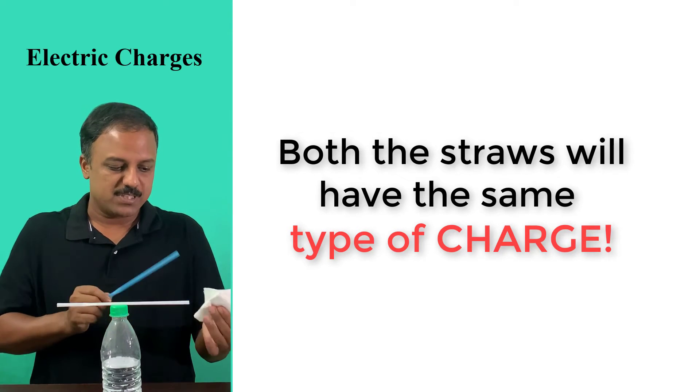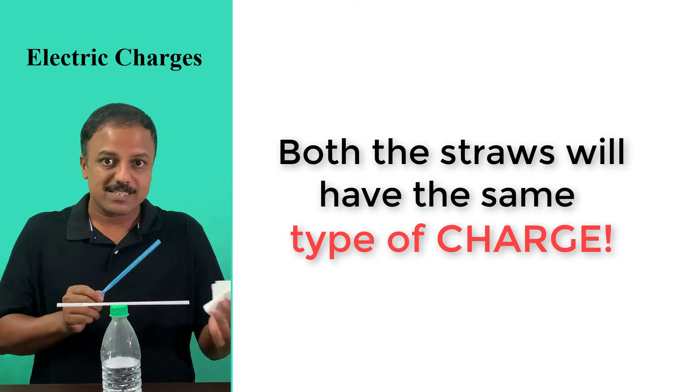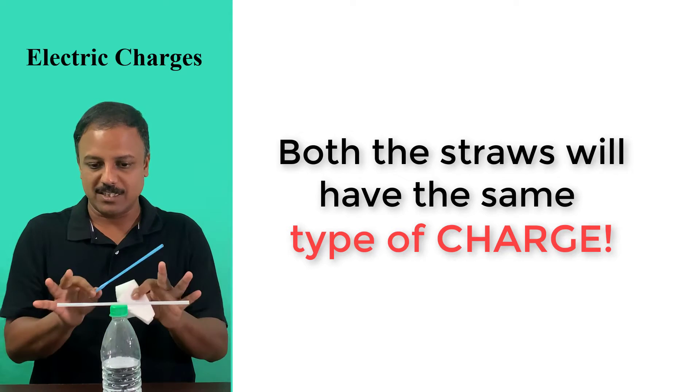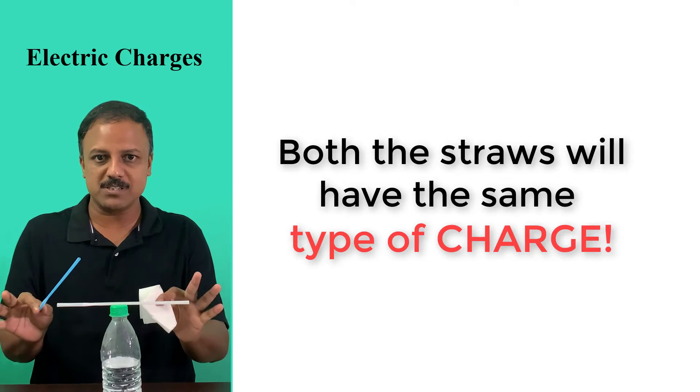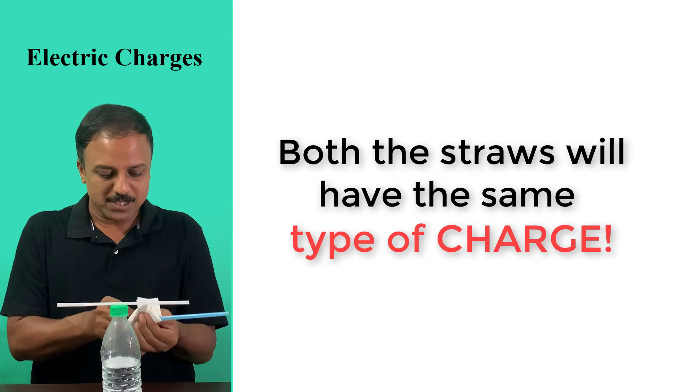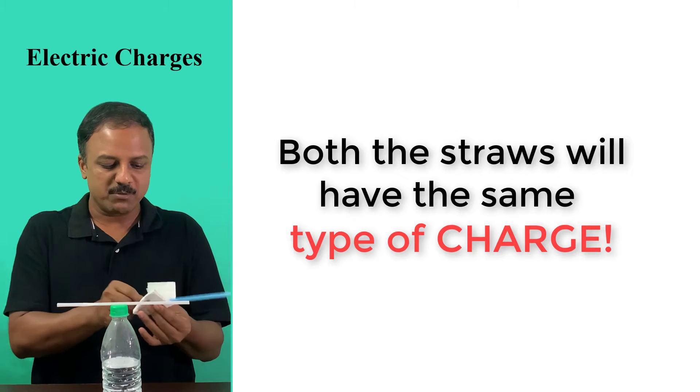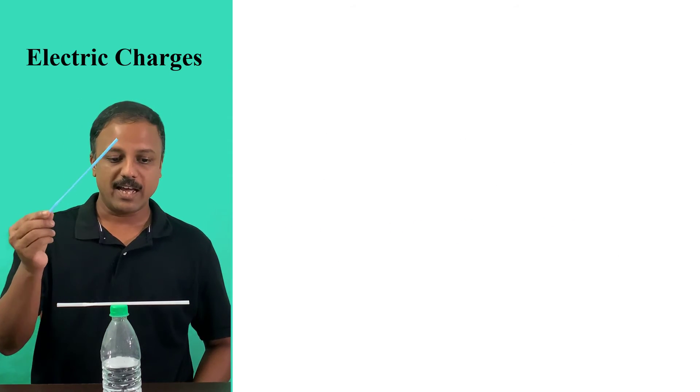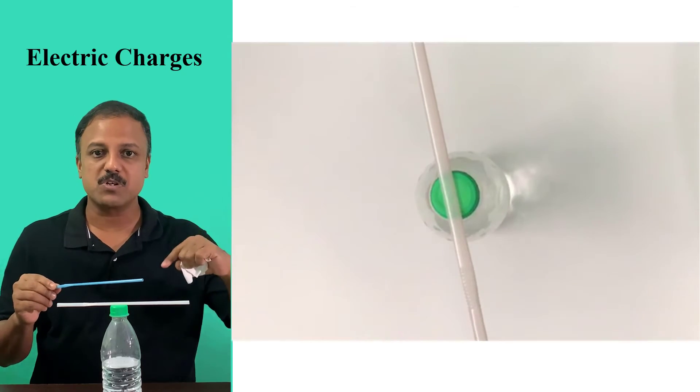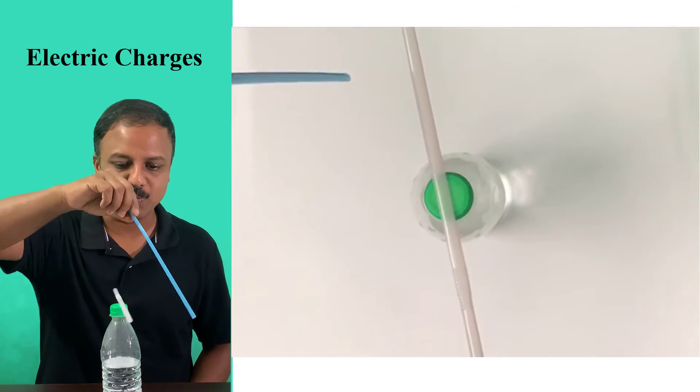So whatever type of charge, say for example, I don't know what type of charge is there on this straw. So let's assume that there is some particular type, either positive or negative. So when I do the same process, when I repeat it, I'm going to get the same type of charge on this straw as well. And when I bring these two straws close to each other, you can see what happens.